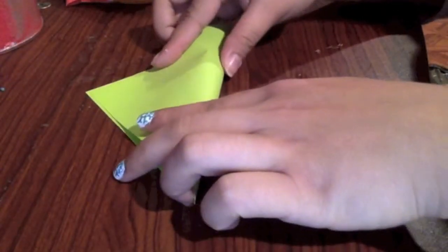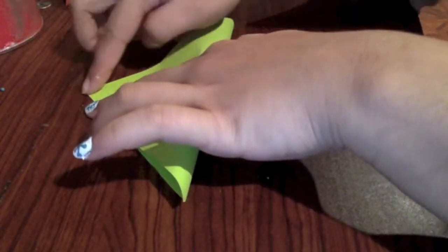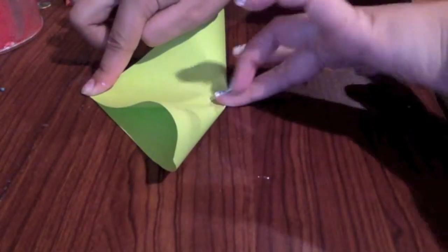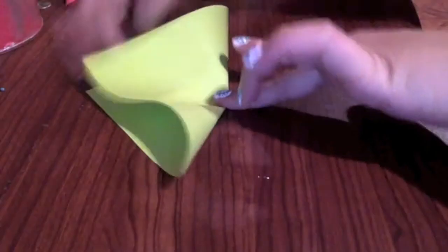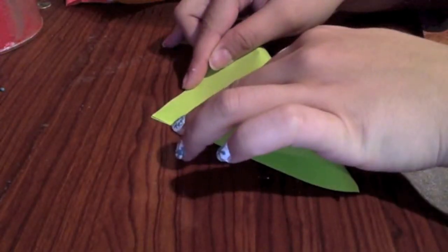Once you have your diamond, fold it in half, but when you crease it, only crease the middle just like this. Just crease the middle and lightly crease it, don't press hard. You will do this on the other side as well, on the opposite side.